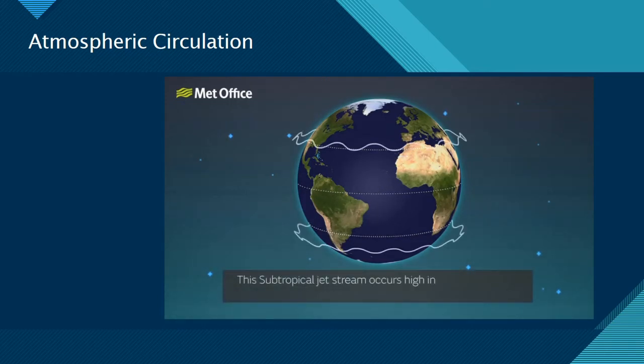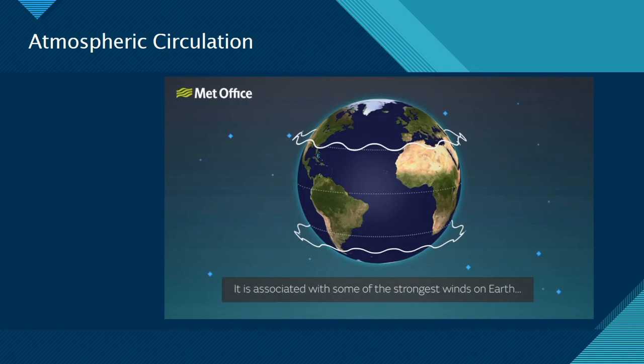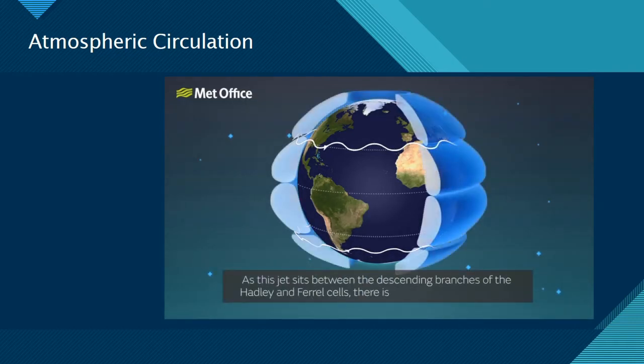This sub-tropical jet stream occurs high in the atmosphere between 12 to 15 kilometres. It is associated with some of the strongest winds on Earth, reaching over 280 miles per hour at times. As this jet sits between the descending branches of the Hadley and Feral cells, there is little associated weather.